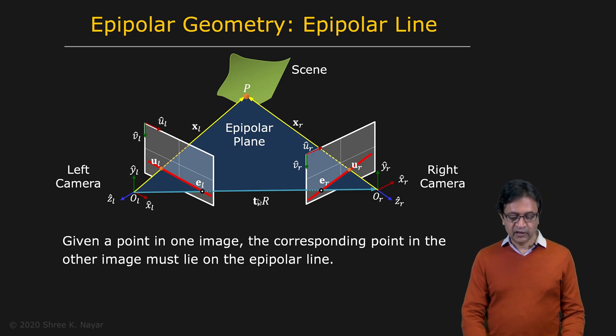So now if you're given a point in one of the two images, let's say the left image UL right here, it turns out that the corresponding point in the right image must lie on the epipolar line in the right image corresponding to that particular point P.